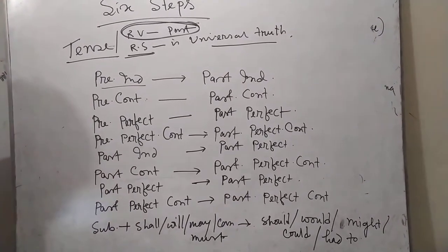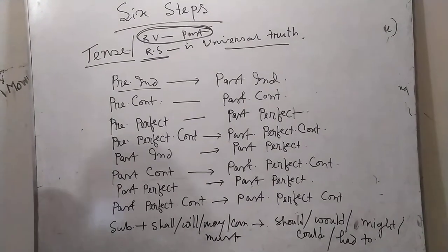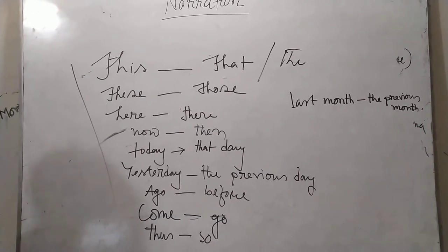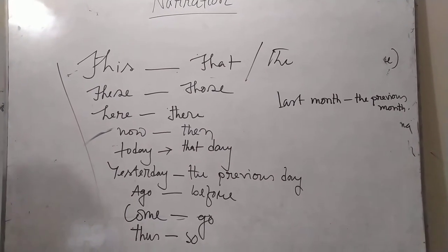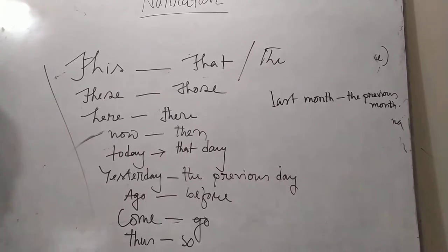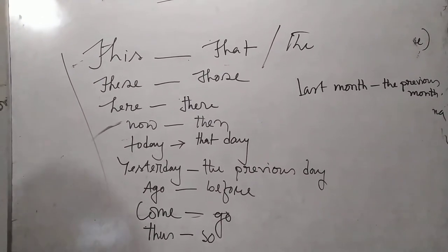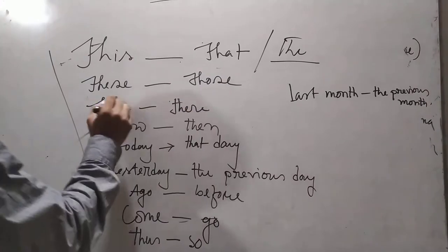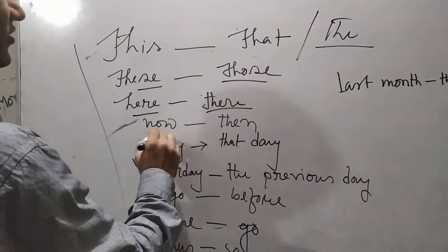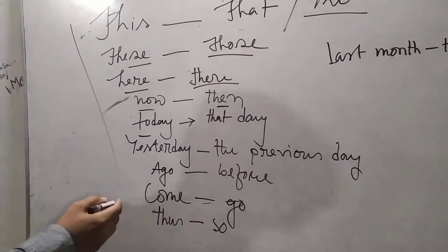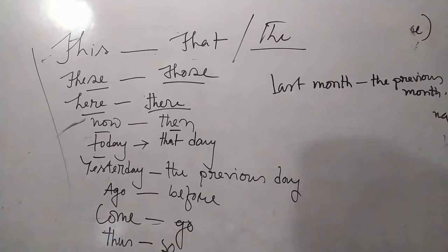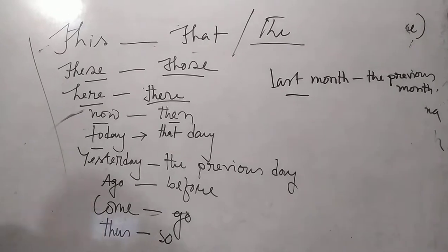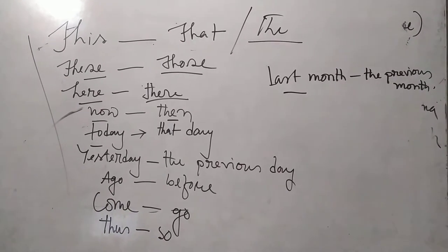Then you have to think about the change of time and place expressions. The time and place of direct speech denote nearness and they will be changed into words which denote far. The changes are: 'this' (as adjective) → 'the'; 'these' → 'those'; 'here' → 'there'; 'now' → 'then'; 'today' → 'that day'; 'yesterday' → 'the previous day'; 'ago' → 'before'; 'last month' → 'the previous month'; 'tonight' → 'that night'. This is how you change nearness to far.